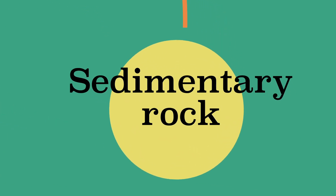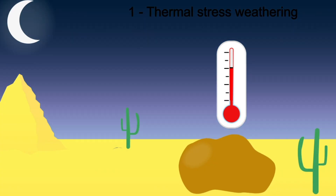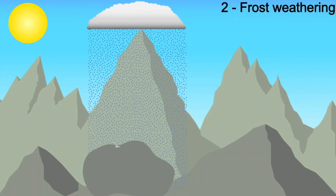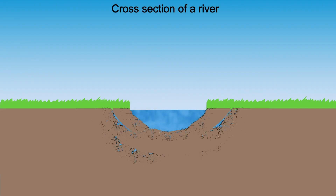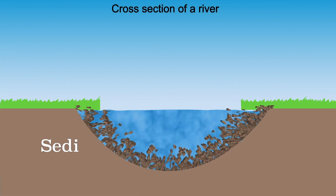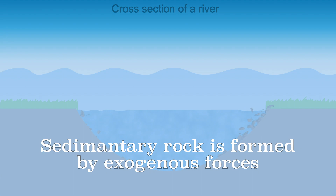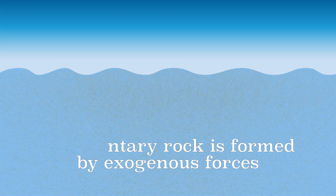The second group of rocks is sedimentary rock. Sedimentary rock is formed when other rock is broken down by weathering or erosion. Because these are exogenous processes, sedimentary rock is created by exogenous processes. After weathering or erosion has occurred, the material is deposited again layer by layer, for example by rivers or the sea. The rock is formed by lithification of the layers.